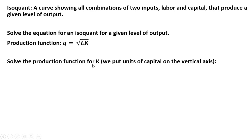We're going to solve the production function for K. Remember, we put units of capital on the vertical axis, so we're going to solve this for K, while units of labor go on the horizontal axis. The first thing I'm going to do is square both sides, so q squared, and then we're going to square the right-hand side to get rid of the square root symbol. So we get q squared equals L times K. I'm going to divide through by units of labor, and we have our expression for an isoquant for a given level of output.